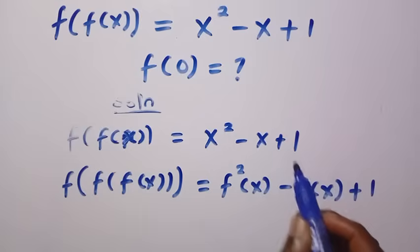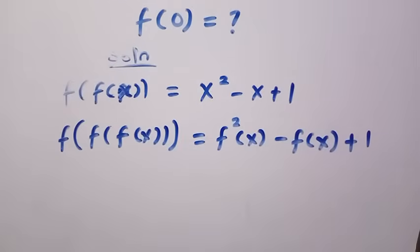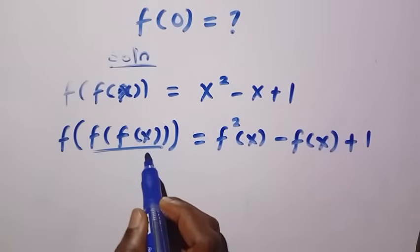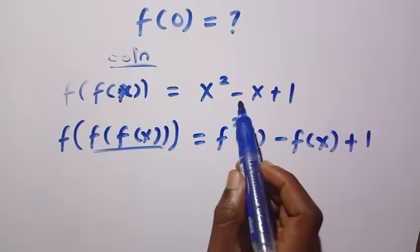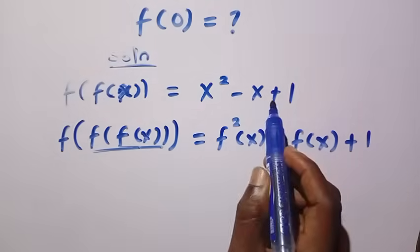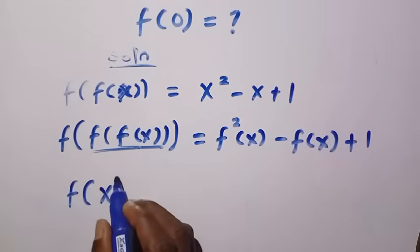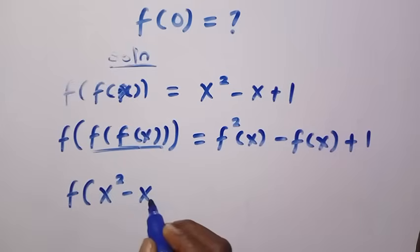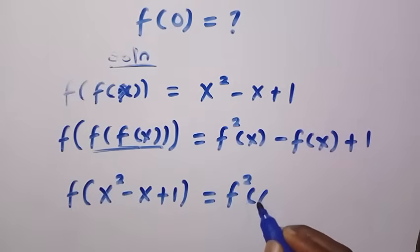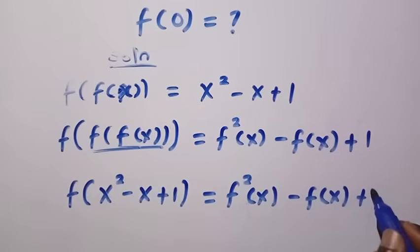And why is this 1? Because f of 1 is a constant, so it remains 1. Then after this, we shall observe that f of f of x here is equivalent to x squared minus x plus 1. So by replacing this with x squared minus x plus 1, we are going to have f of x squared minus x plus 1 equals f squared of x minus f of x plus 1.